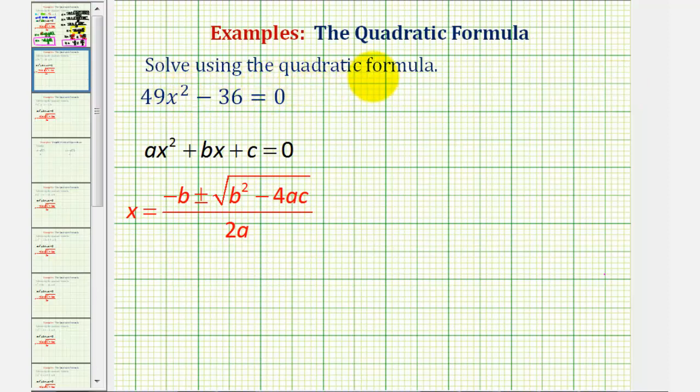In this example, we're asked to solve the quadratic equation 49x² - 36 = 0 using the quadratic formula. Hopefully we recognize that we could solve this by factoring since this is a difference of squares, but we'll go ahead and solve this using the quadratic formula and then check it by factoring.